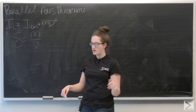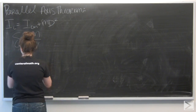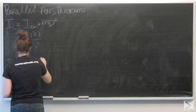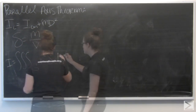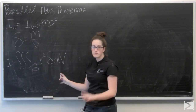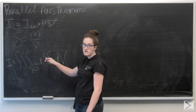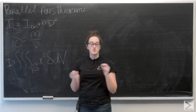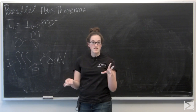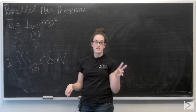Let's recall how we find moment of inertia. Our moment of inertia is given by the triple integral over the volume of our region — the integral of r squared times density, where r is the distance to the axis we're rotating around. We know that we're given a constant density, so I can replace this density with M over V and pull it out of the integral.